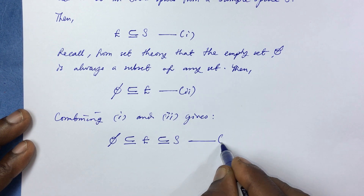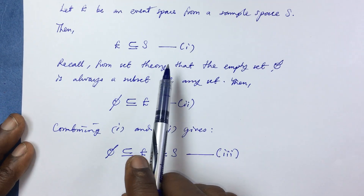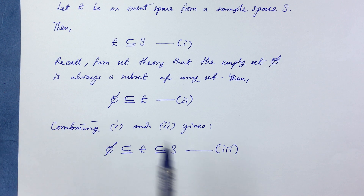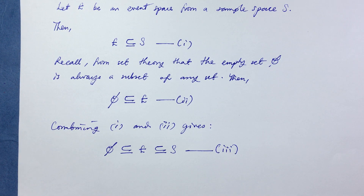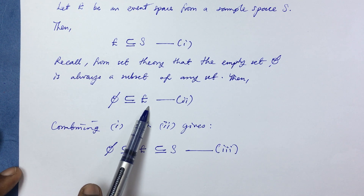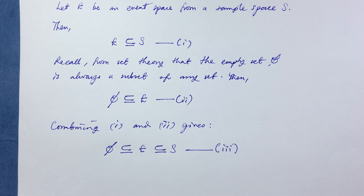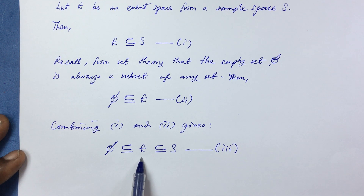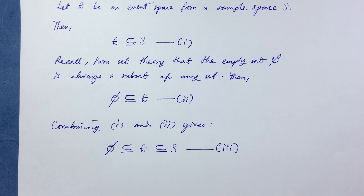So the event space E is a subset of the sample space S — true from our definition in the last class. The empty set from set theory is also found in every set, so the empty set is clearly a subset of the event space. Combining equations 1 and 2 gives the relationship ∅ ⊆ E ⊆ S, where the sample space is the set of all possible outcomes from a random experiment.